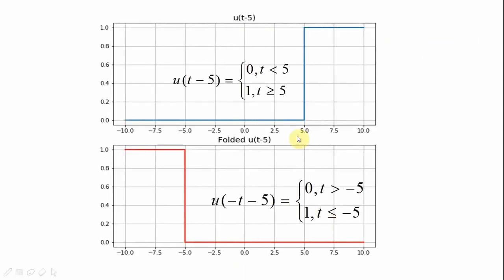For shifting the signal, suppose we are shifting the unit step signal by a quantity 5 to the right and left. When it is shifted to the right it is written as u(t - 5), which is defined as 0 for t less than 5 and 1 for t greater than or equal to 5. And the folded signal shifted to the left is u(-t - 5), and it is 0 for t greater than -5.